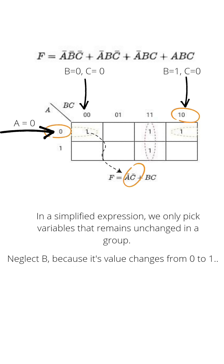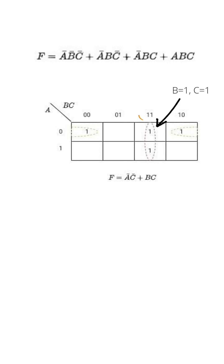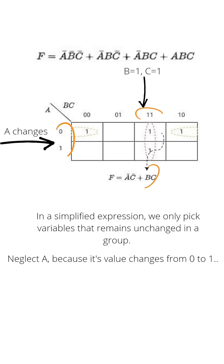Moving to the next group: here a changes from zero to one, and b is equal to one and c is equal to one throughout this group. With the help of this group, we get b dot c.